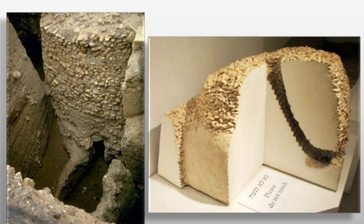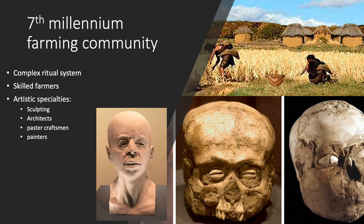We know they were highly skilled in architectural planning and masonry because the structure still exists and is solely made out of stone. The later settlements had complex farming systems and complex ritual systems, which means they believed in the afterlife. With those complex systems came specialized art skills — there were people who sculpted, there were architects, plaster craftsmen, and painters.